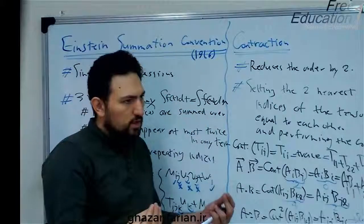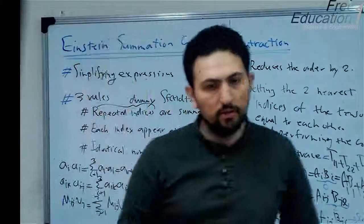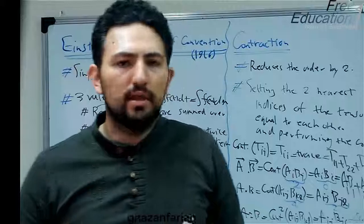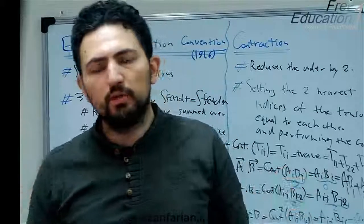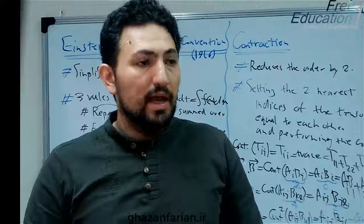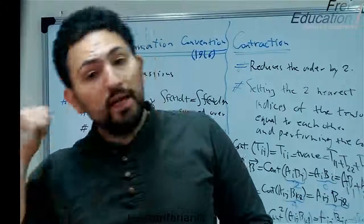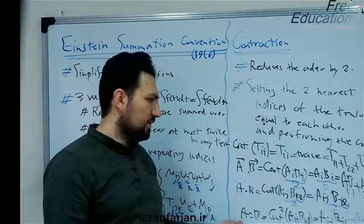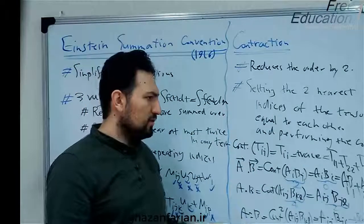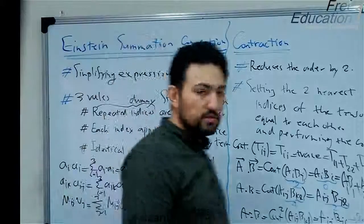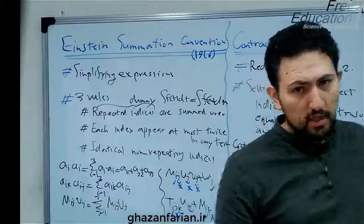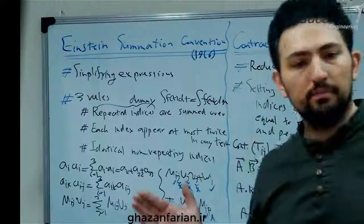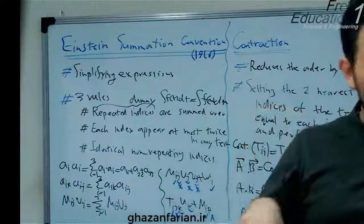The double contracted product of two matrices is used in computing dissipation in the conservation of energy equation, and in computing the second invariant of the deformation tensor, which is used in non-Newtonian fluid mechanics.